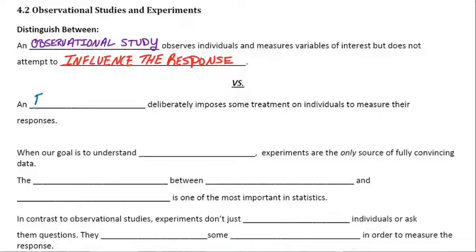In contrast, an experiment deliberately imposes some treatment on the individuals in order to measure their responses.